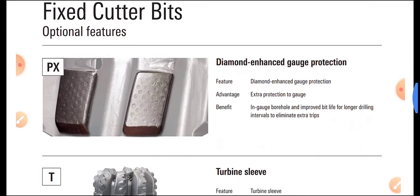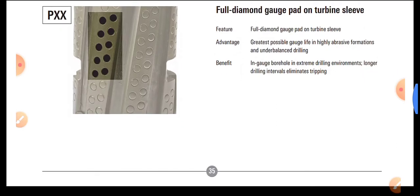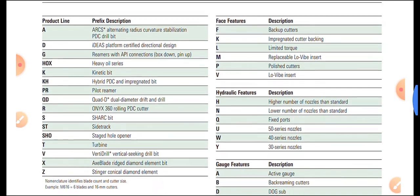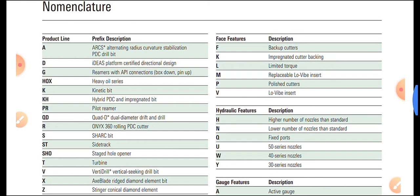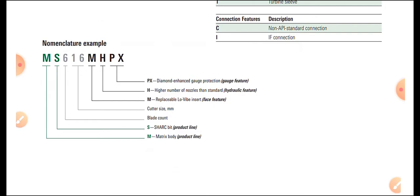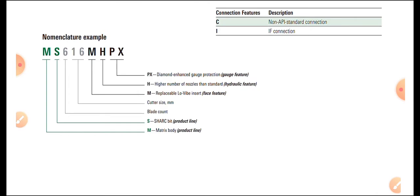On the sides, rimming elements are provided for long life of the bit. Regarding additional nomenclature: M stands for material — Matrix or Steel — S stands for Shark type, 6 is blade count, and 16 is cutter size. Three additional letters may appear; for example, M can indicate replaceable low-vibration elements with a higher designation number.